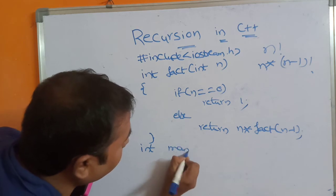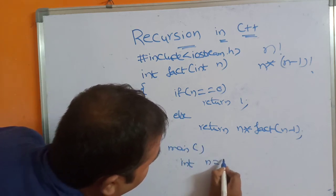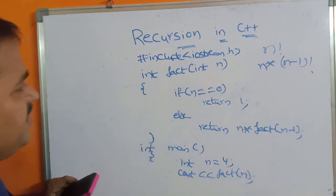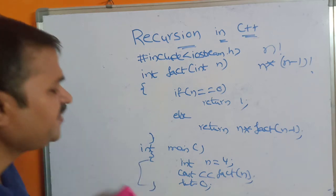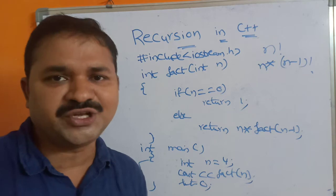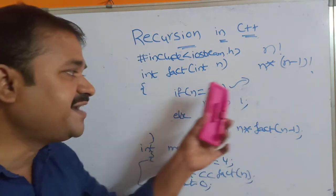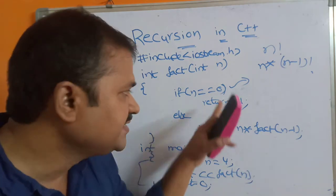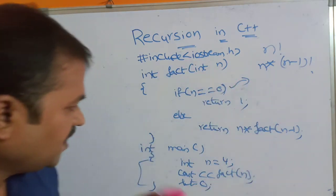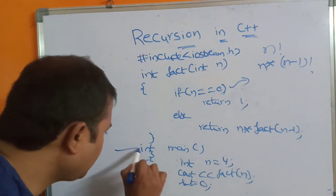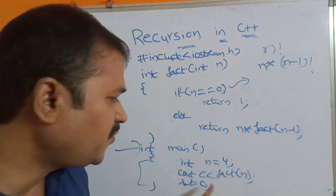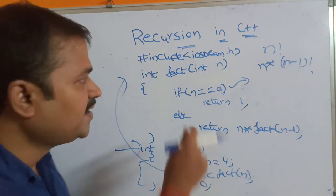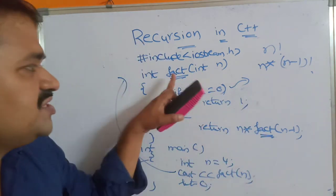Now let us define the main function. int main, int n = 4. cout << fact(n). Next, return 0, because if the program is successfully compiled and executed, the main function returns 0. The base condition here is if n == 0 — whenever n equals 0, we can come out from the function. This base condition is very very important while implementing recursion. The execution of a program always starts from the main function, so control goes to the fact function.